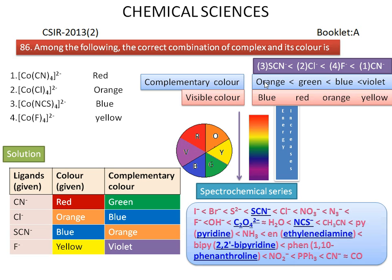For orange absorption, the complex should appear blue. For green absorption, it should appear red. For blue absorption, it should appear orange. For violet absorption, it should appear yellow. This gives the correct combination of complex and its color.